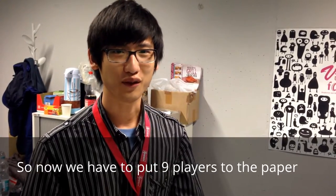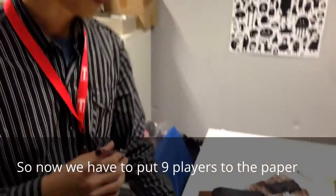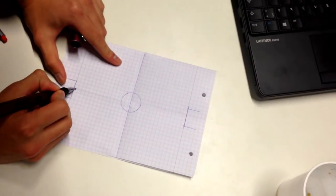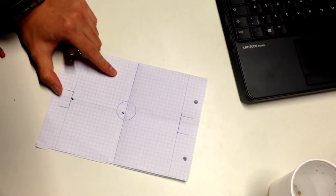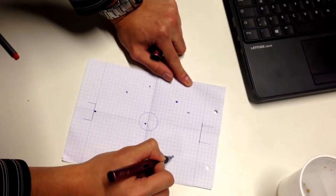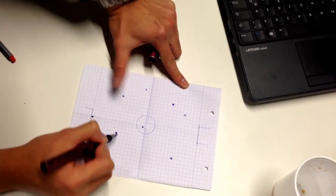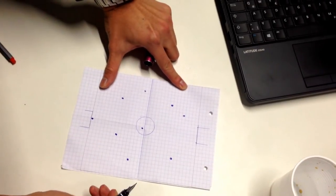So now we have to put eight players to the paper so we can play together. One of them have to be the goalie of course, and one of them have to be the kickoffer. Six, seven, eight, nine, done.